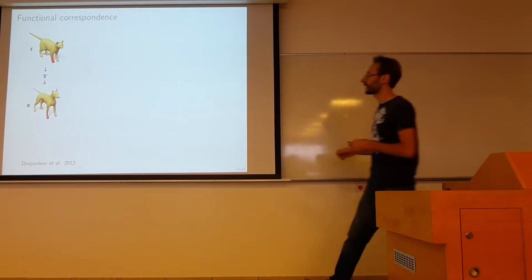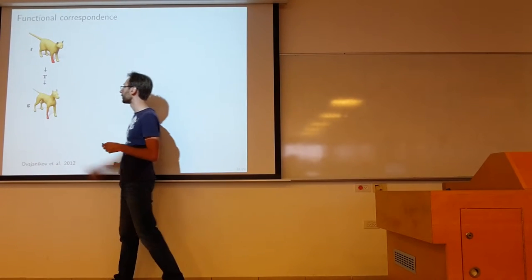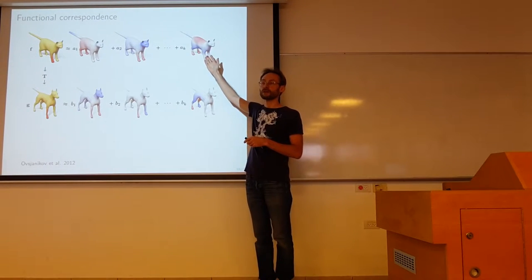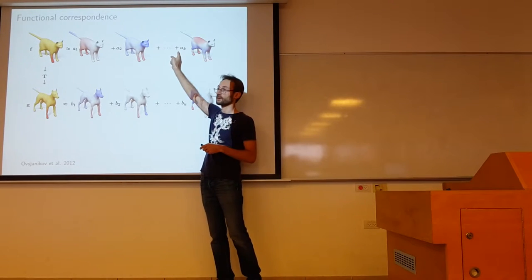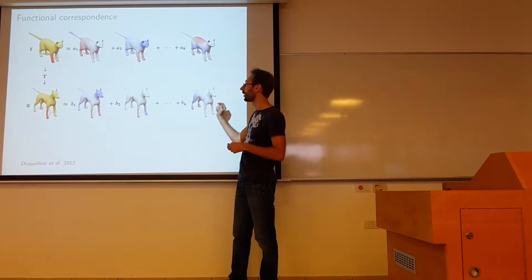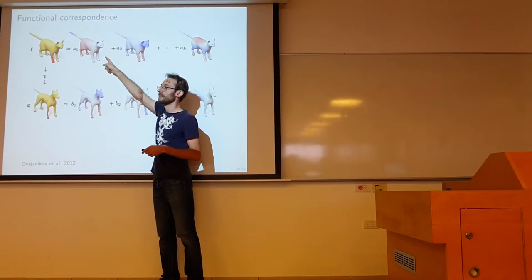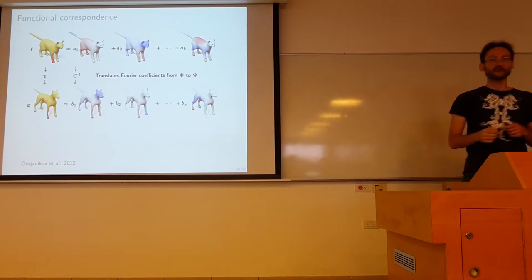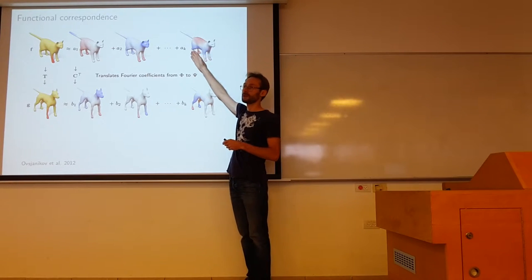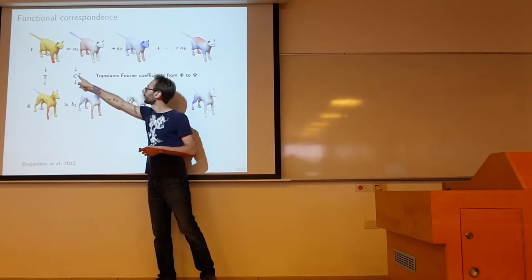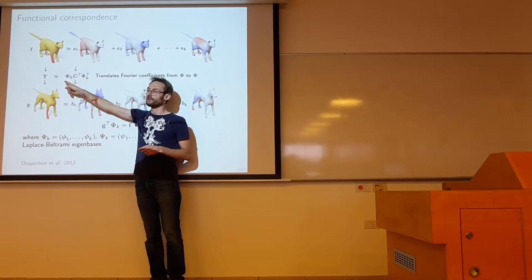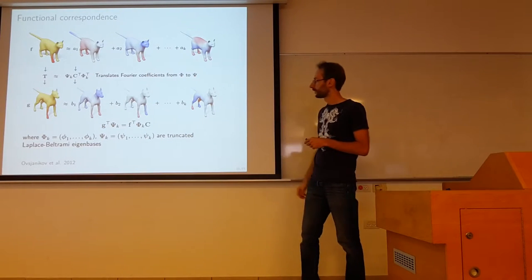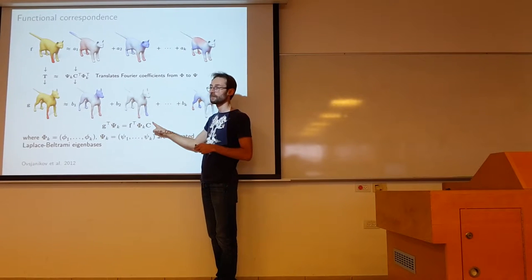The main idea is as follows. We have a function F on the cat and a function G on the dog and a linear operator that maps it. On each of these manifolds I have an orthogonal basis — the Laplacian eigenfunctions. Taking the first k vectors, I have a Fourier basis on the cat and a Fourier basis on the dog. I can express the functions in these bases by Fourier coefficients a and b. Now I can encode the correspondence operator as a map between these Fourier coefficients — a k-by-k matrix C. It's a low-rank approximation of this operator. The correspondence problem is now encoded by this matrix C.